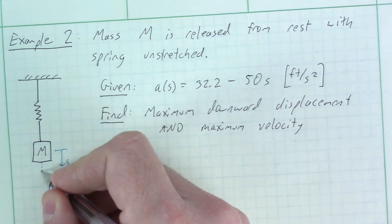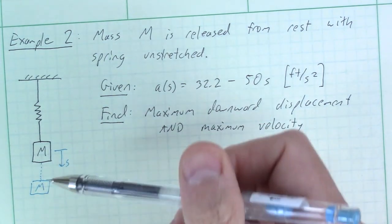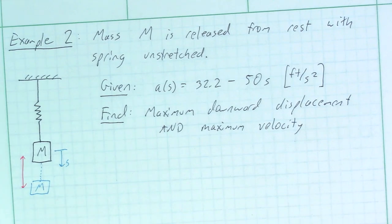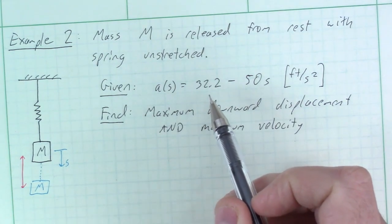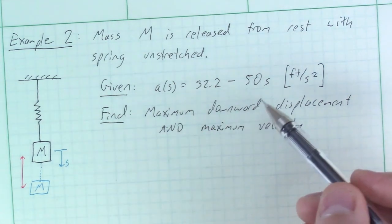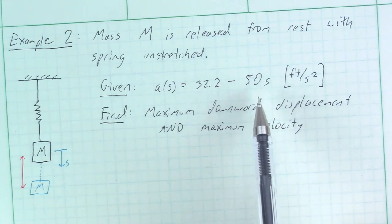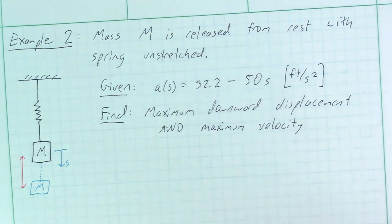Due to gravity, the mass will fall. As it falls, the spring pulls back upward. We're in kinematics, not worrying about forces directly, but they inform our acceleration expression. Gravity causes a downward acceleration of 32.2 ft/s², and as s increases downward, the spring provides a restoring force proportional to 50s, pulling upward. So the spring constant is 50. This is kinematics only — describing how acceleration, velocity, and position relate through time.